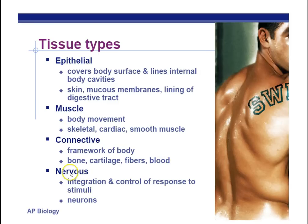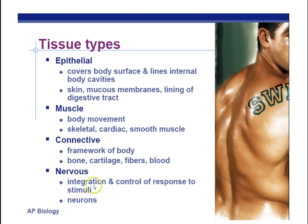The last type of tissue is nervous tissue. Nervous tissue is made up mainly of neurons — that's the primary cell of the nervous system. This tissue is for taking in information from the environment, integration, and then responding to that environment.